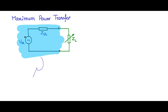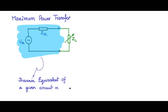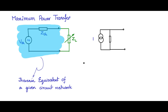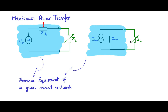This circuit network represented by the Thevenin equivalent is a fixed circuit network, and it can also be represented by a Norton equivalent. Both are equivalent. This portion of the circuit network can be represented by a Norton equivalent with iNOR and ZNOR, and the external resistance ZL connected across the same two output terminals.